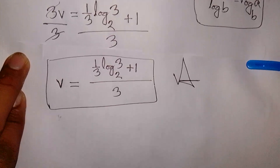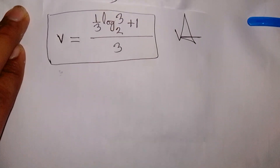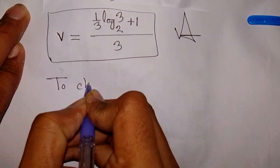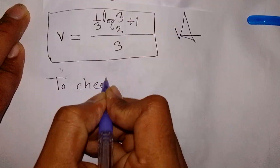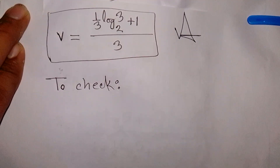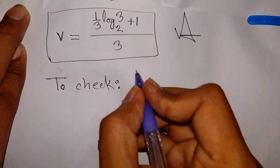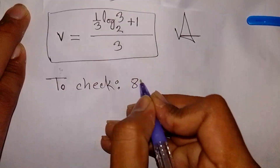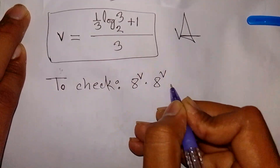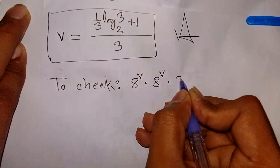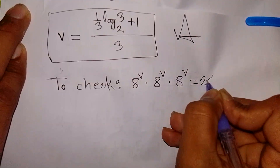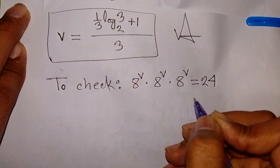Now let us check the equation. We need to verify that 8 power V times 8 power V times 8 power V is equal to 24 using the value of V we found.